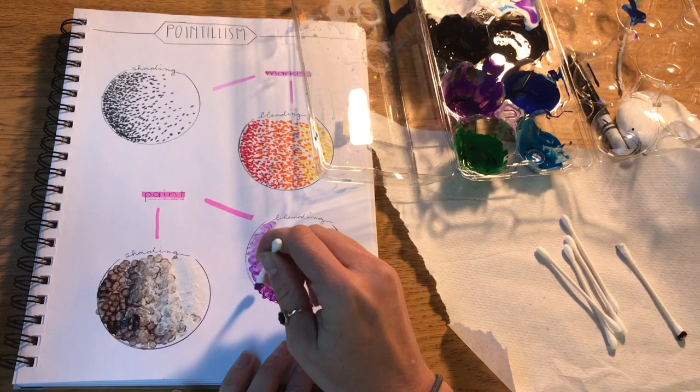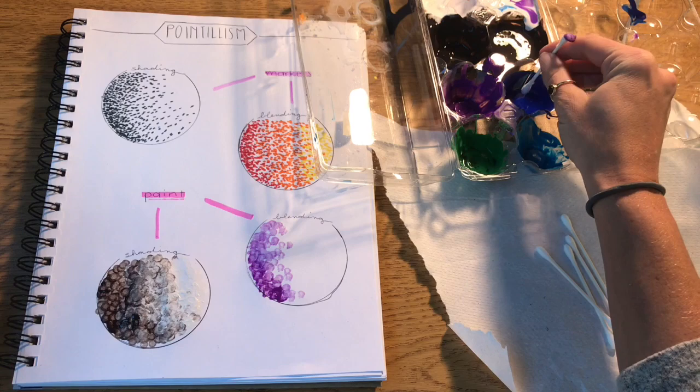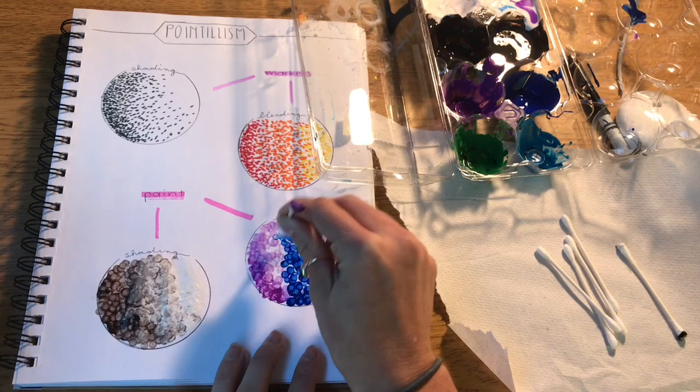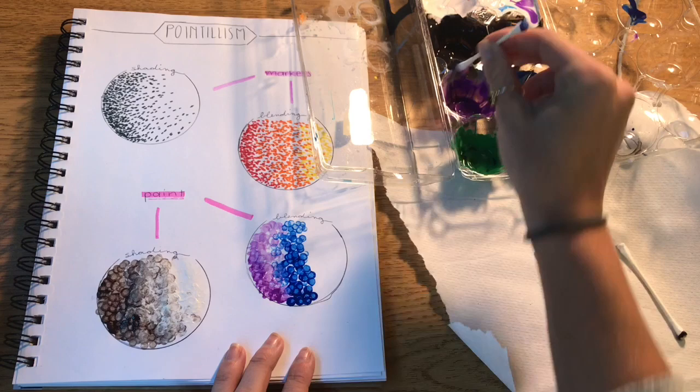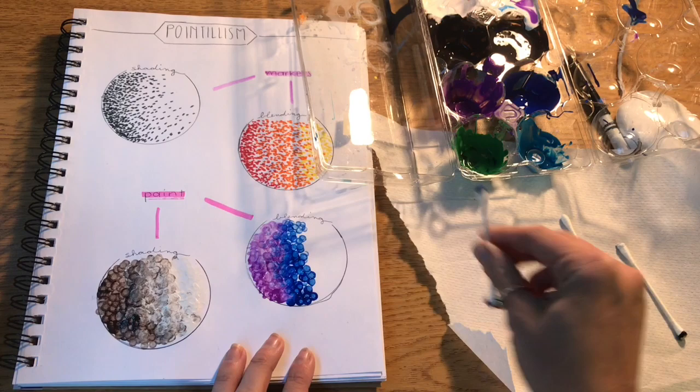As I get to that imaginary line I'll do less dots farther apart. Now I'll flip around and get some blue. And now I can keep flipping my q-tip and letting those colors blend more and more, so they just fade into each other. Then I'll have to get a new q-tip so I can get my green.